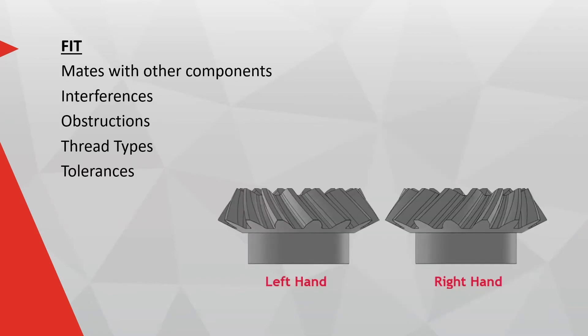Fit refers to the interaction with other components. Does the change affect the mates with other components in assemblies? Does the change introduce any interferences or obstructions? Were there any changes made to the thread types and tolerances used? As an example, see the left hand and right hand versions of a helical bevel gear shown below. Although these two versions have the exact same external dimensions and almost the exact same features, the two versions are not interchangeable, as this will introduce interferences with the mating gears in an assembly.